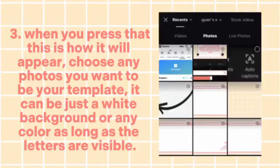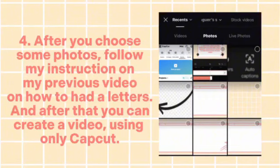When you press that, this is how it will appear. Choose any photos you want to use as your template — it can be a white background or any color, as long as the letters are visible. After you choose your photos, follow the instructions from my previous video on how to add letters, and then you can create a video using only CapCut.